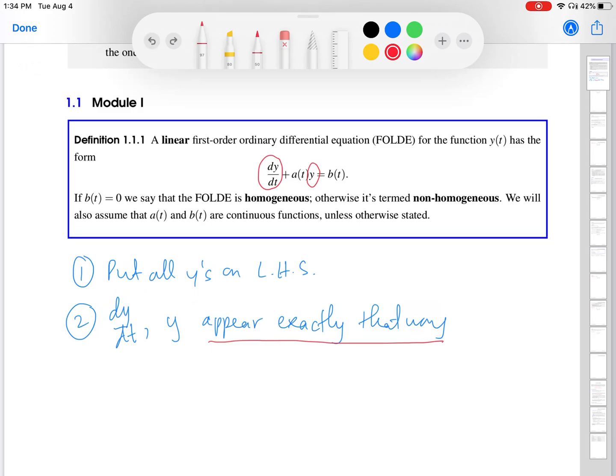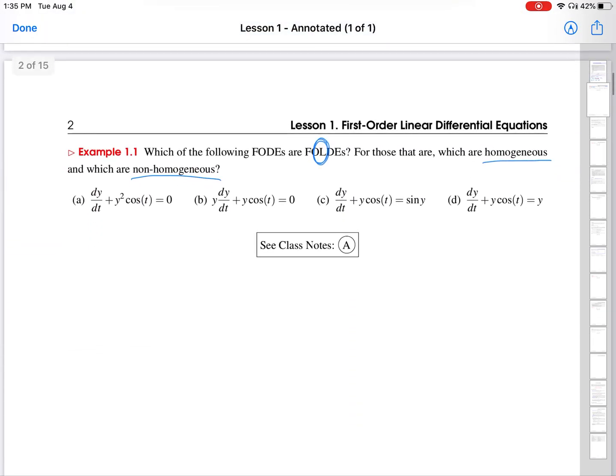The second is to make sure that DY over DT and Y appear exactly that way. What I mean by this is, if you notice the form of the ODE, the Y on the left-hand side is by itself. So, there is no Y squared, there's no Y cubed, there's no non-linear factor of Y. Same thing with DYDT. It's not like it's DYDT squared or sine of DYDT.